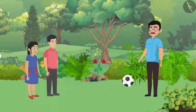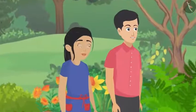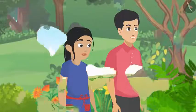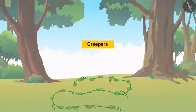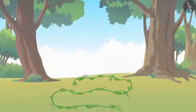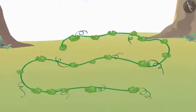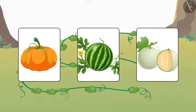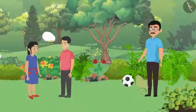On the other hand, creepers don't even get up from the ground. Their stems are too soft, which is why they spread here and there on the earth. Watermelon, musk melon, and pumpkin are examples of creepers.